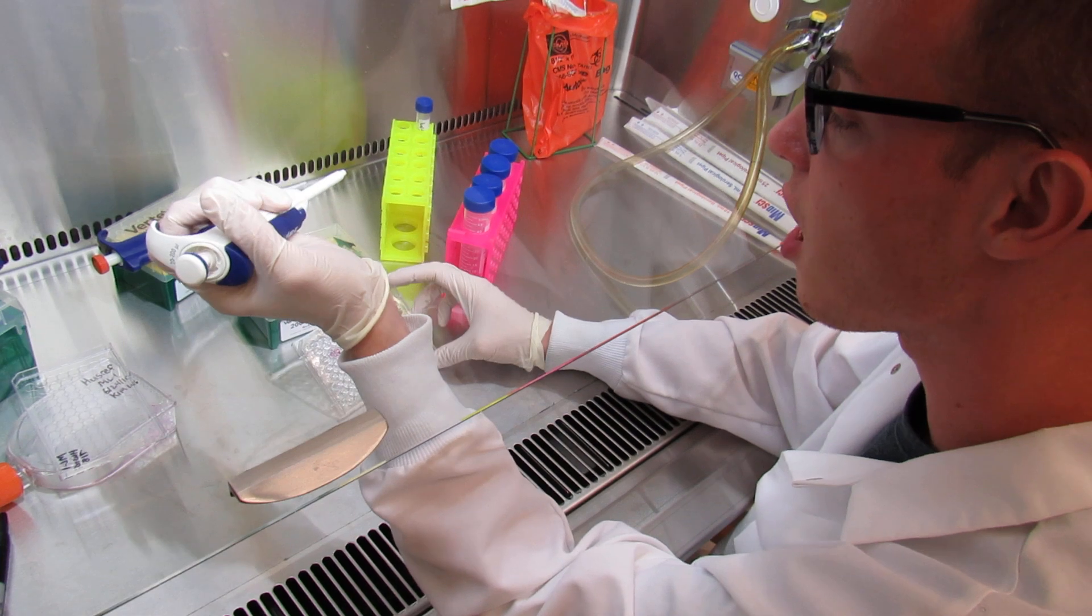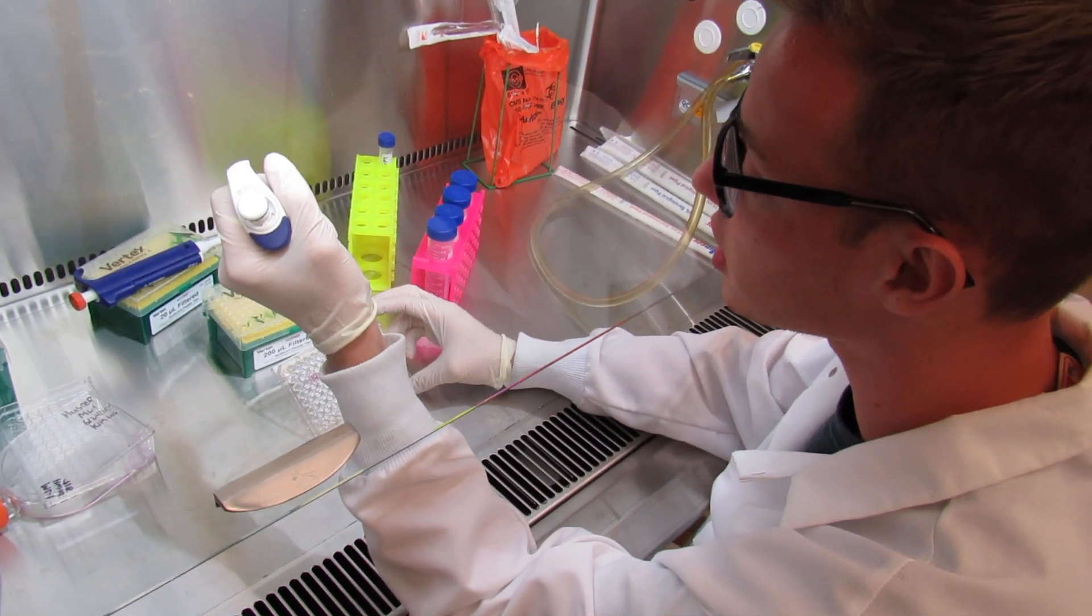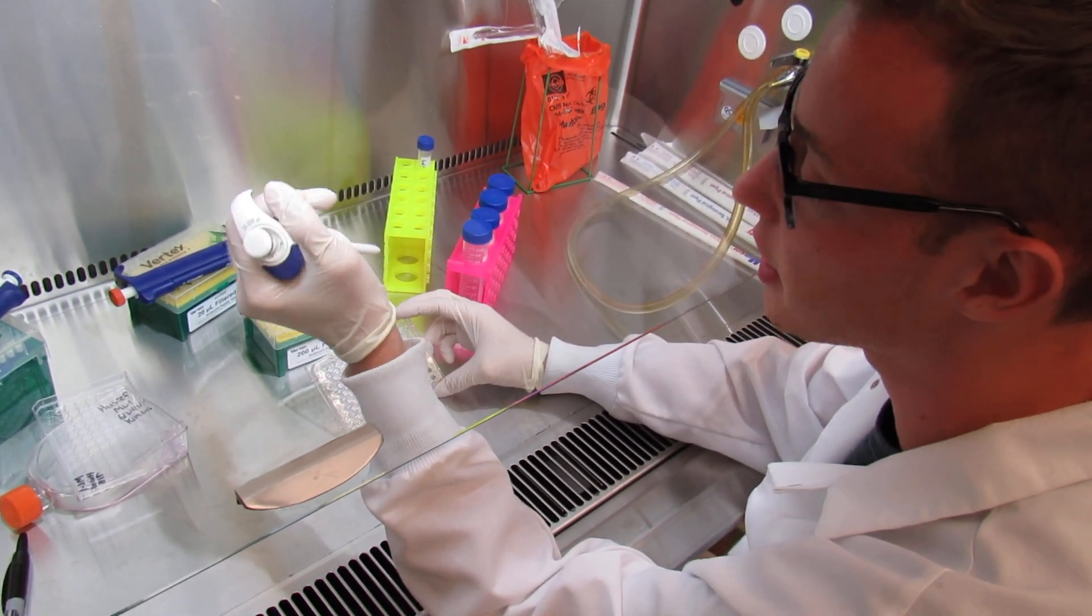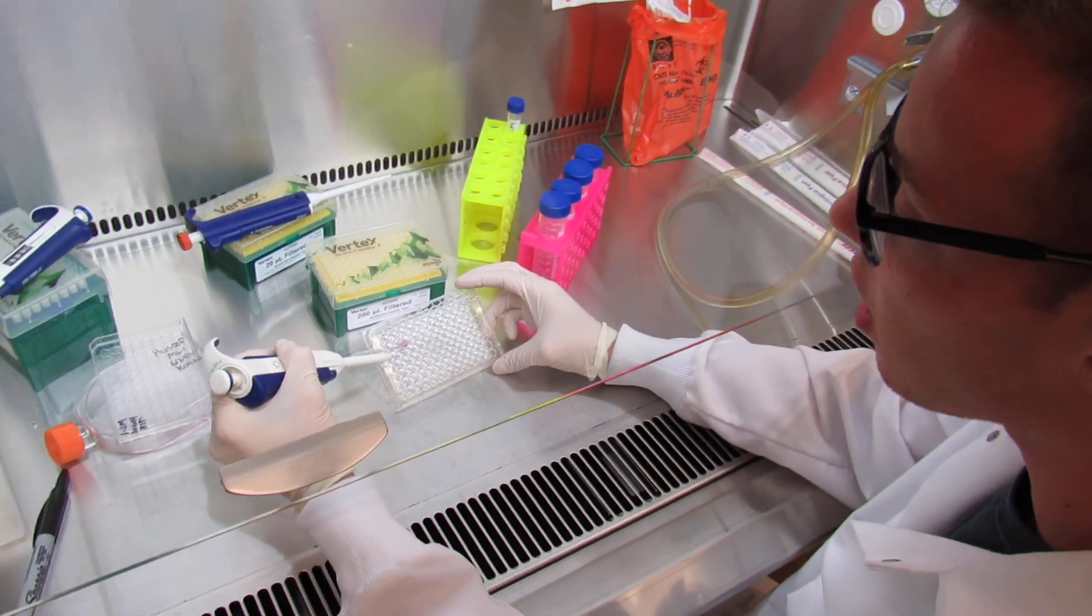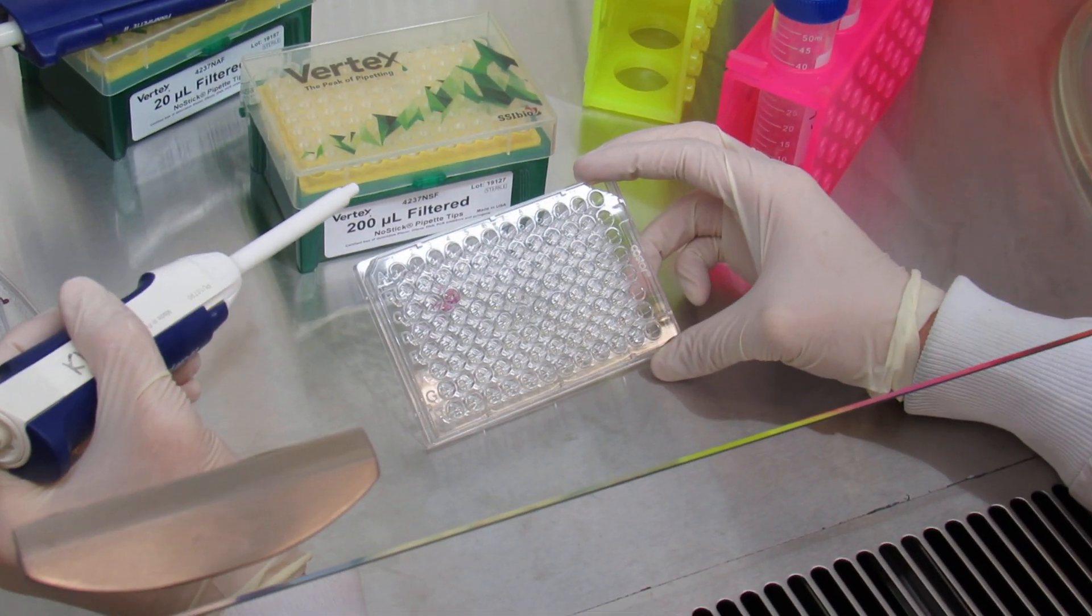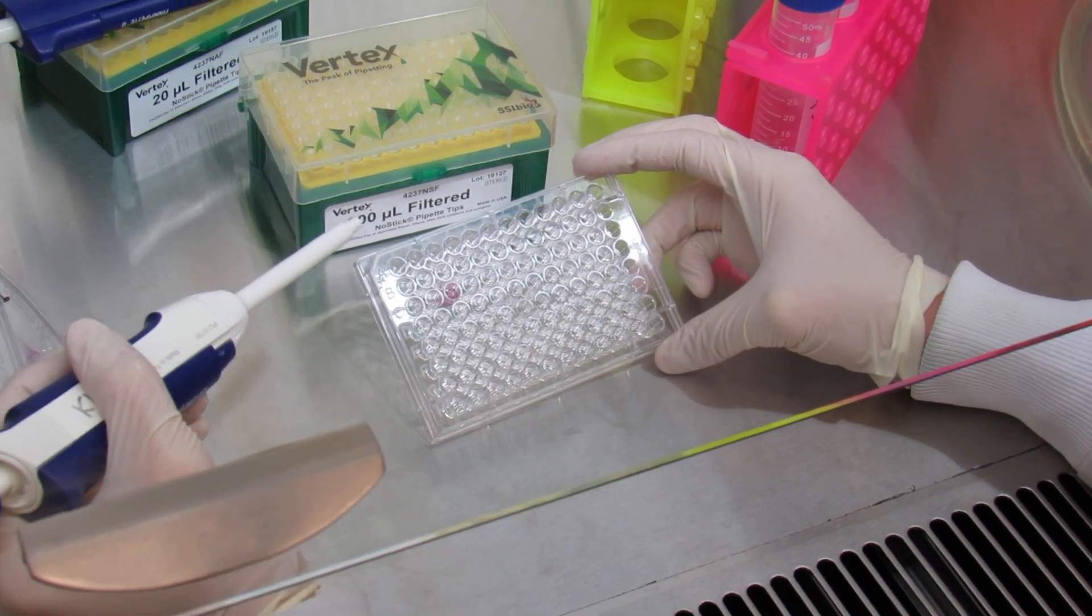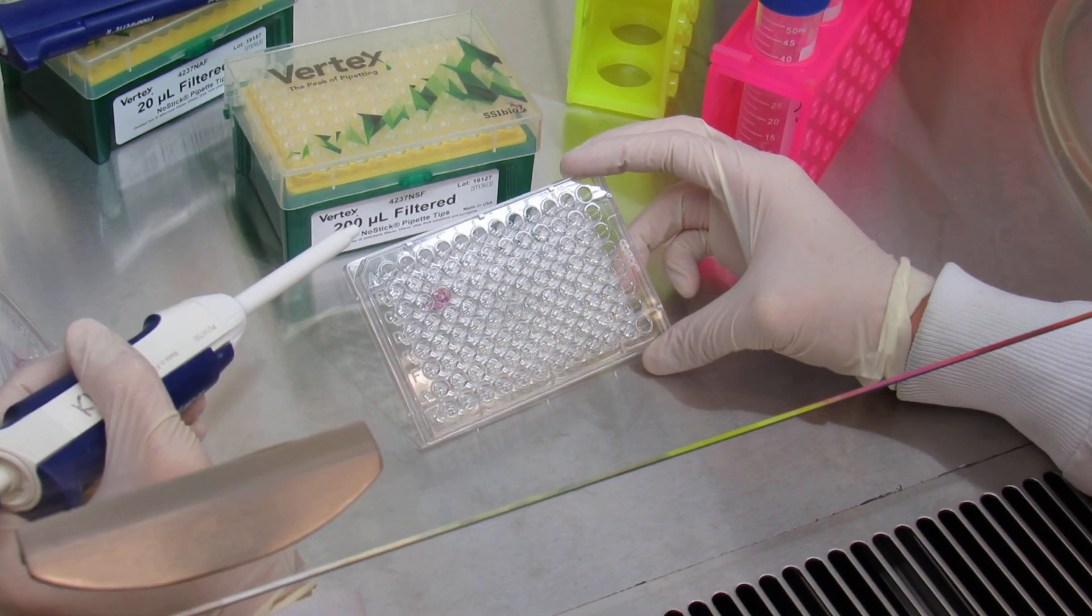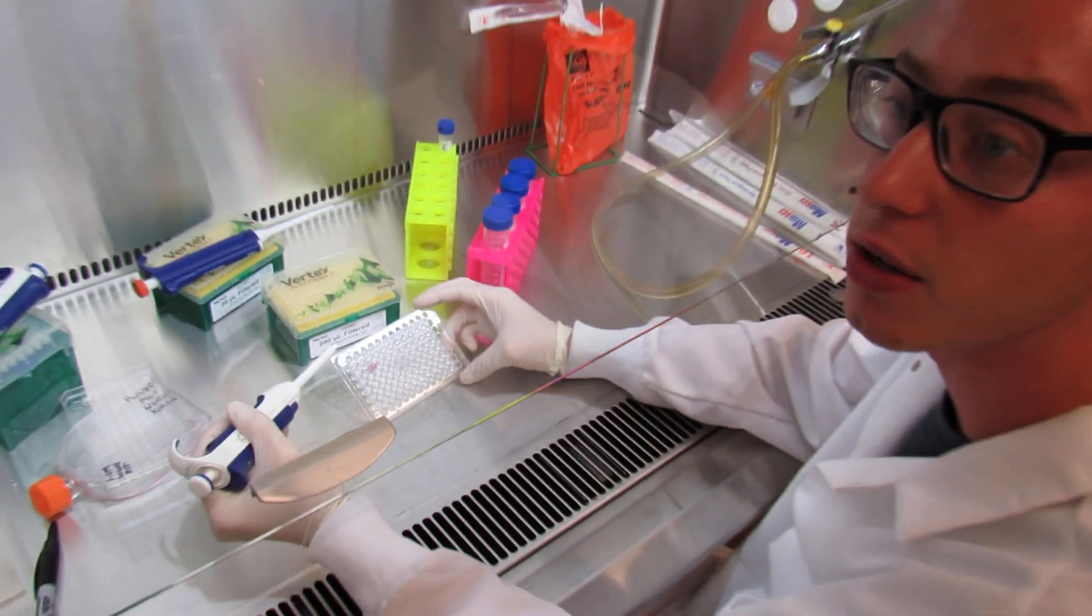You're ready to seed all of your wells and then once you're done with that, you will add 100 microliters of PBS into all of the adjacent wells to avoid evaporation. And then you're able to put it in your incubator for 24 hours to attach at 37 degrees Celsius and 5% CO2.